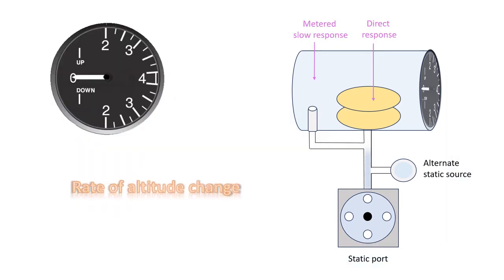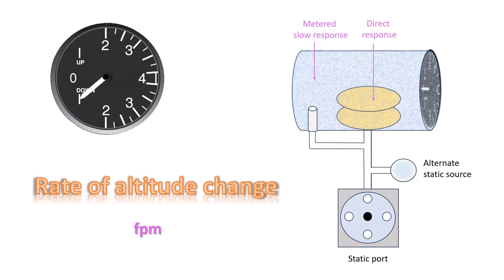Vertical speed tells the rate of altitude change, usually measured in feet per minute. Keep in mind, the rate is determined once the pressure difference stabilizes to a predefined ratio. This process takes a few seconds, causing a delay in obtaining a precise reading.